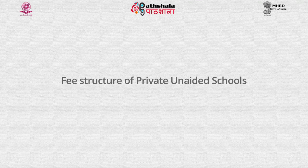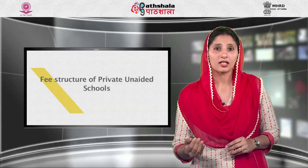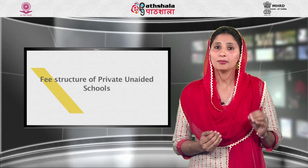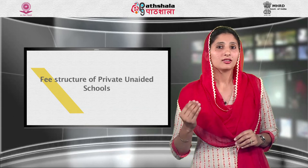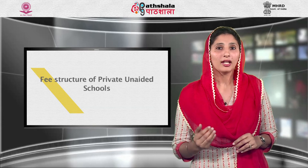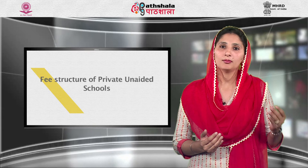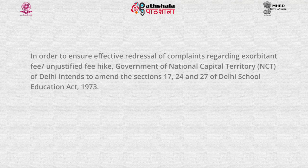While the act provides for the penalty of stoppage of aid and withdrawal of recognition in case of deficiency in aided and unaided schools, in case of government schools there is no penalty for non-compliance that can be imposed. Moreover, there is no proper and distinct monitoring mechanism to ensure that problems identified during inspection have been rectified. Thirdly, fee structure of private unaided schools: the provisions of the Act and Rules do not explicitly prescribe any cap for the fixation of fees and other charges to be levied by unaided recognized schools of Delhi, nor do they limit fee hikes. Therefore, in order to ensure effective redressal of complaints regarding exorbitant fee hikes, the government of NCT of Delhi intends to amend Sections 17, 24 and 27 of the Delhi School Education Act 1973.